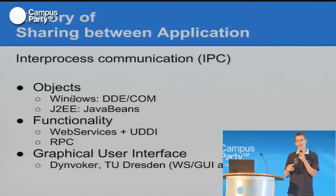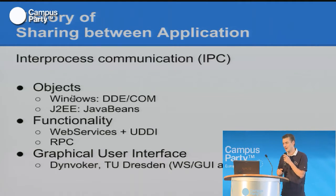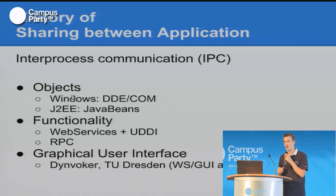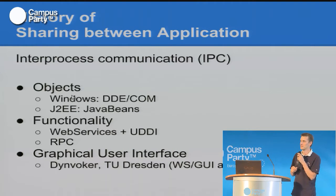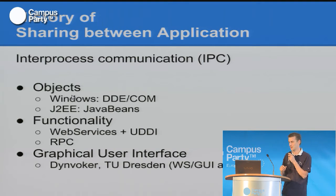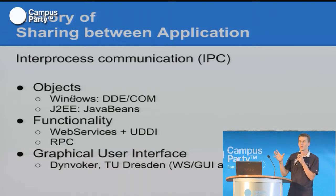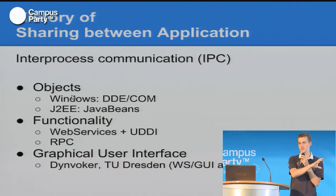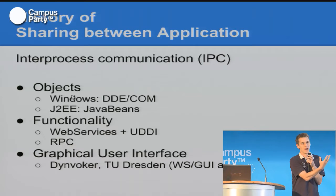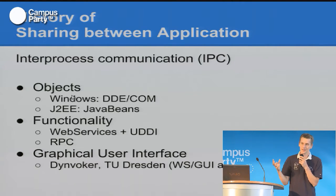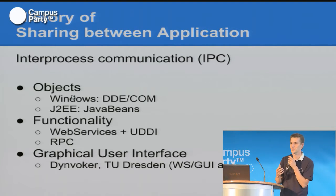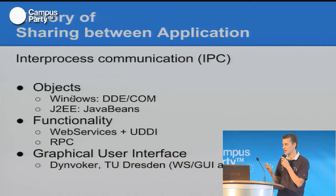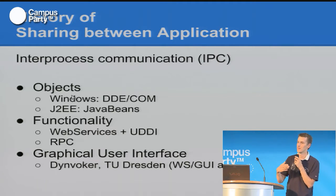It's not really anything new to have inter-process communication. Back in the 90s there was the Dynamic Data Exchange server and the Component Object Model, and also on the Java Enterprise Edition we have Java Beans, where you try to exchange data — that was the first step. Then you have web services where you try to share the functionality.